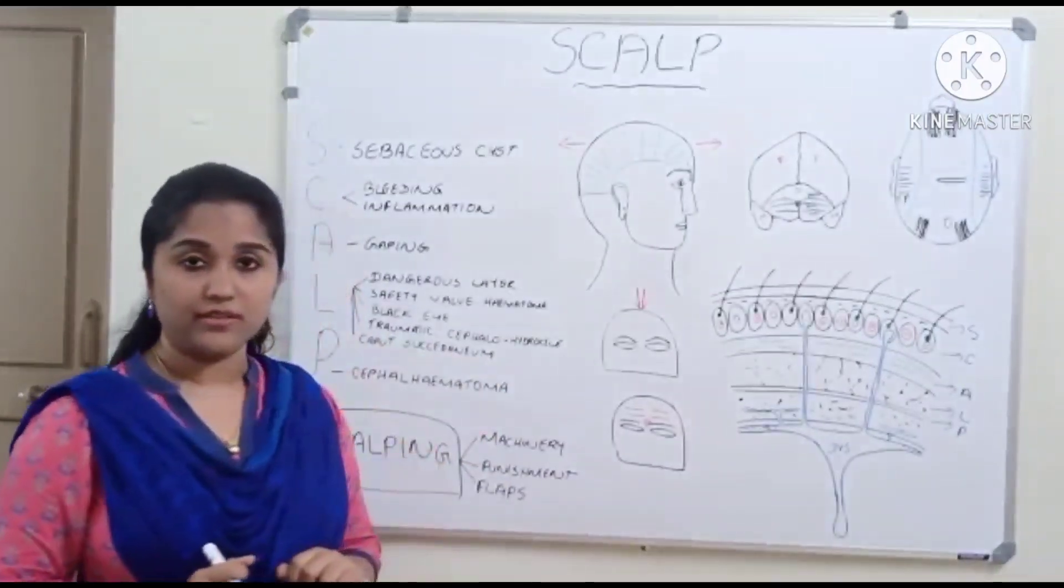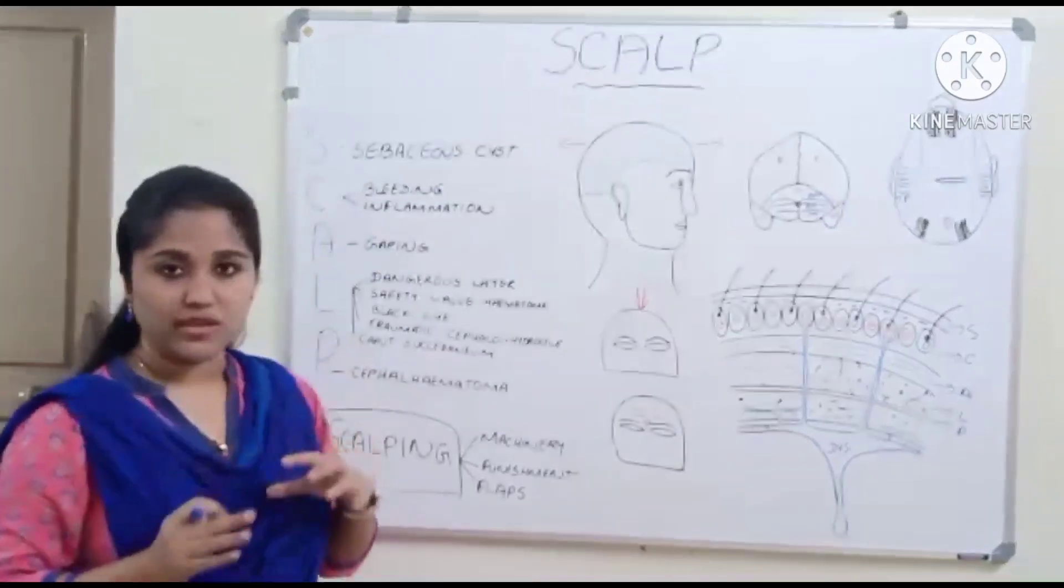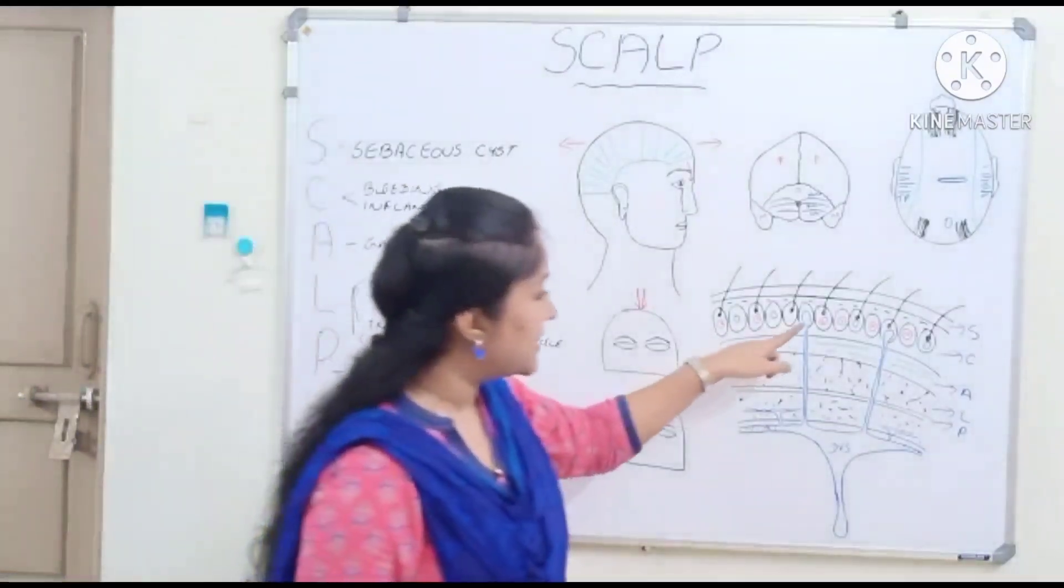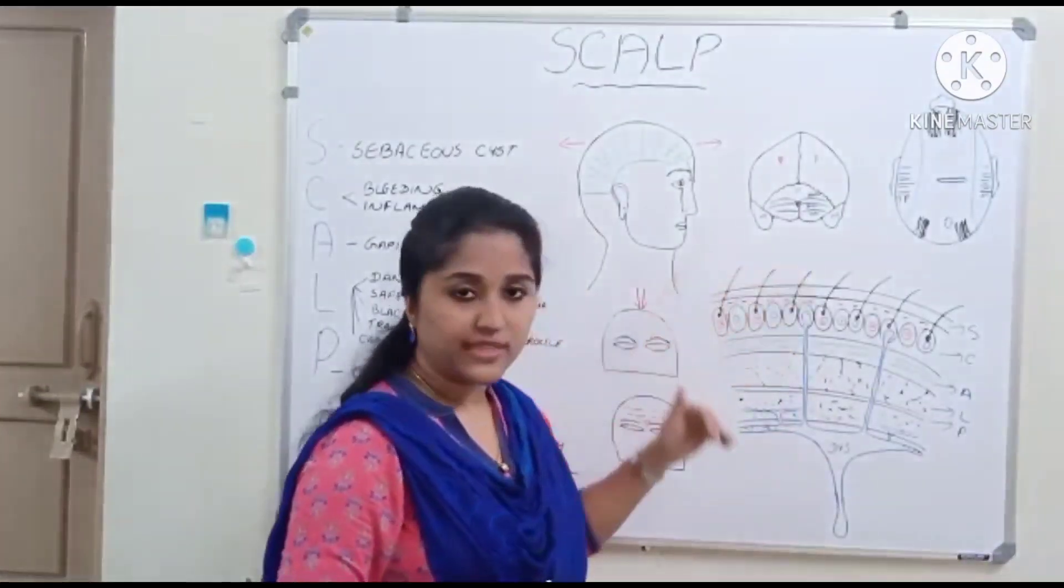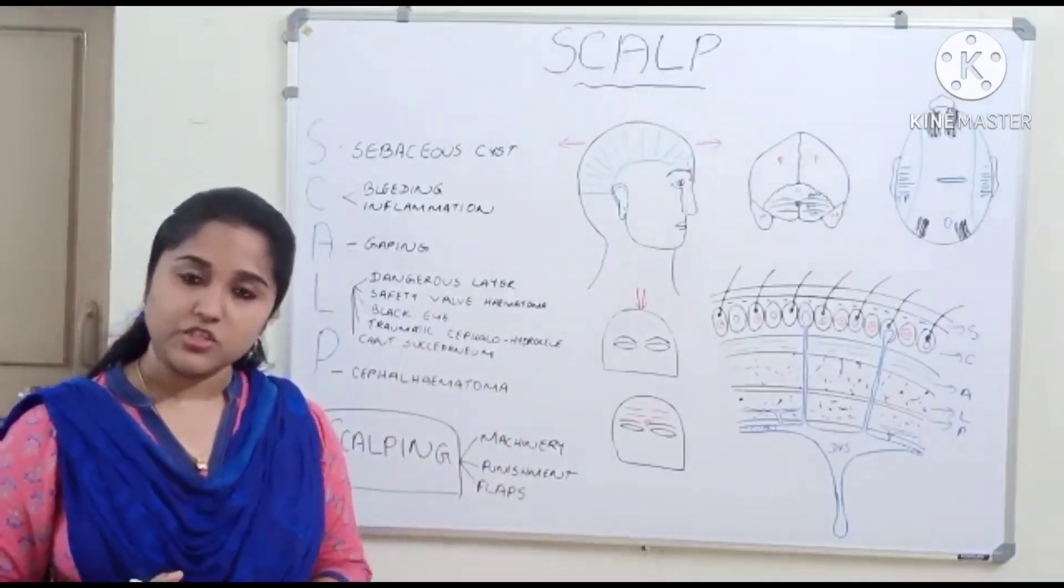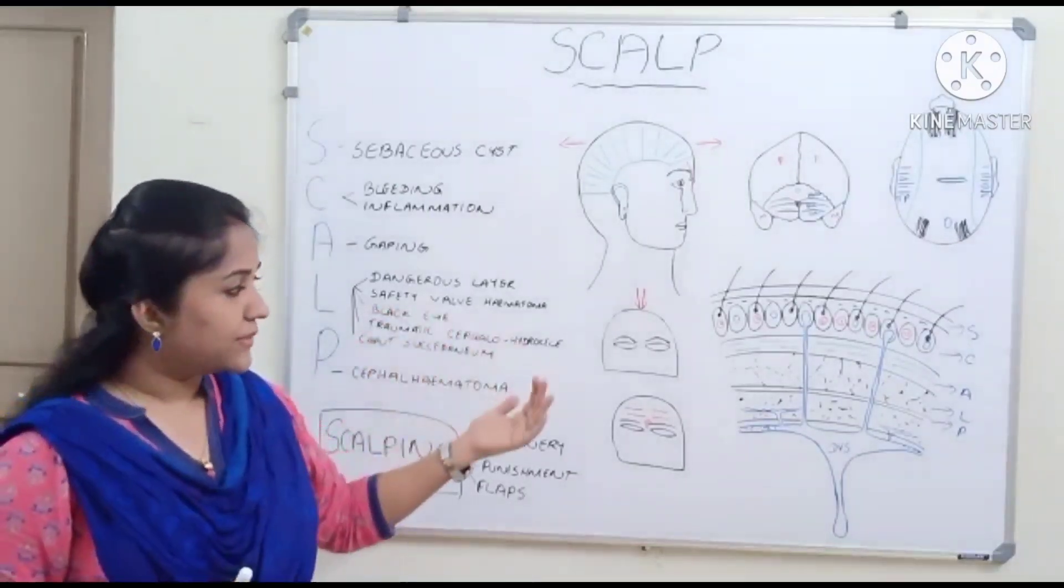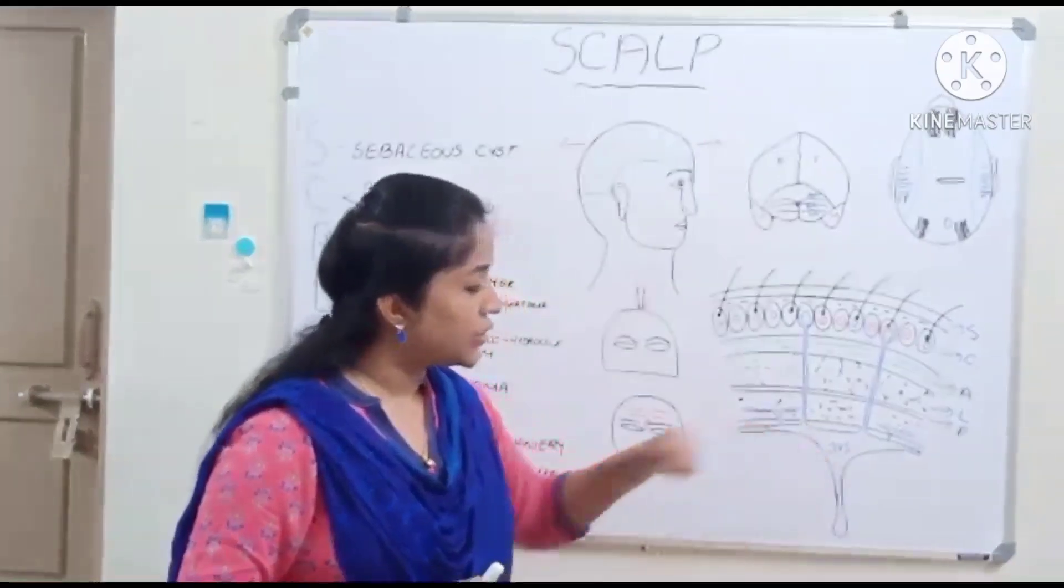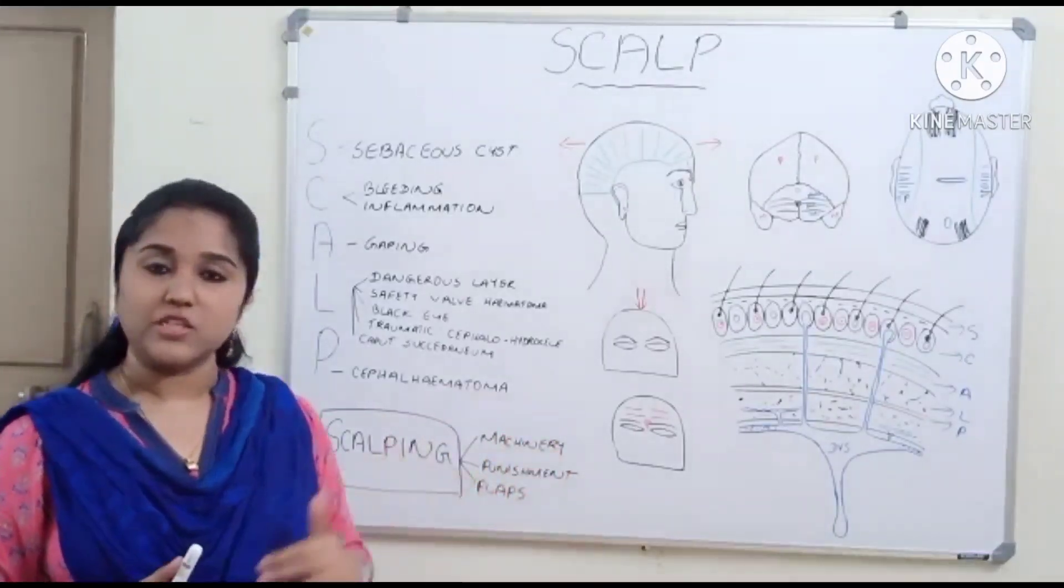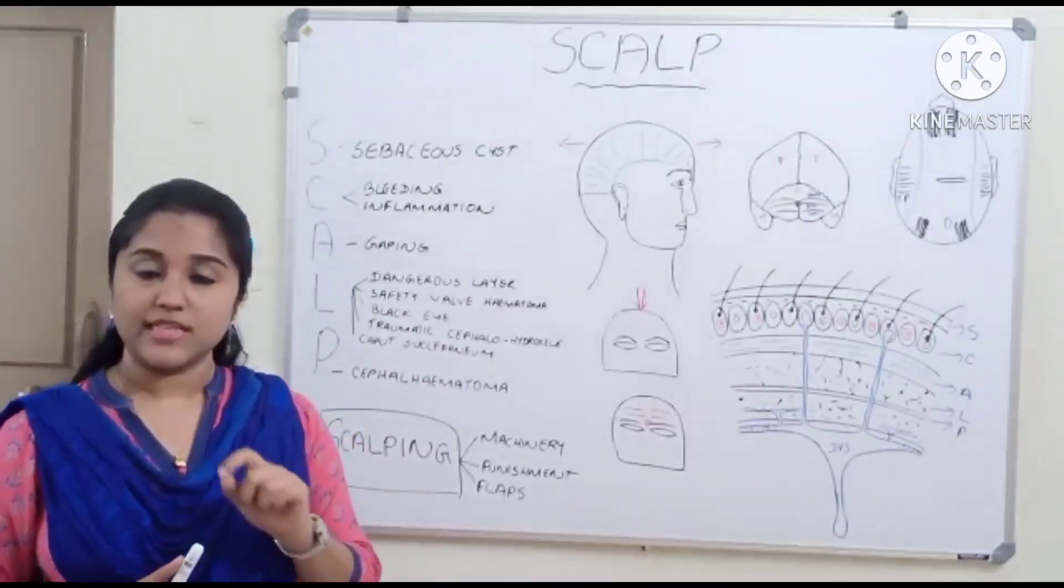The fourth layer is very important, known as loose sub-aponeurotic tissue. As the name suggests, it is a loose area, a potential space. It consists of emissary veins that connect the veins of the scalp to the intracranial venous sinuses. Any infection with collection of pus can get accumulated here and transmitted through the emissary veins to intracranial venous sinuses because these veins are devoid of valves. That is why it is known as the dangerous layer of the scalp.